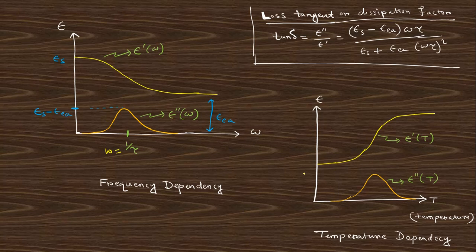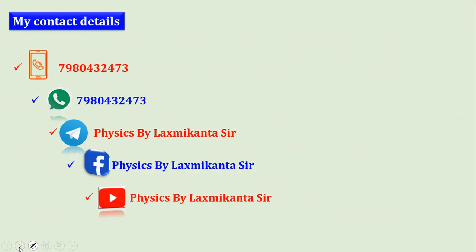In combination, the real part decreases from epsilon_s to epsilon_Ea, and the imaginary part shows a peak at ω equals 1/τ. These frequency-dependence and temperature-dependence curves for epsilon prime and epsilon double prime can be plotted, and the loss tangent or dissipation factor is also given. For any queries, contact via the WhatsApp number provided. Thank you.